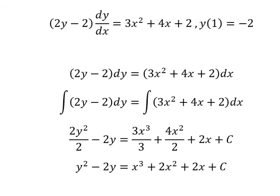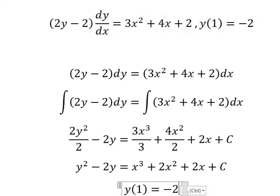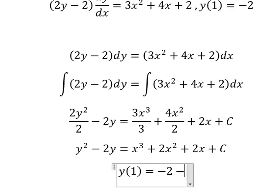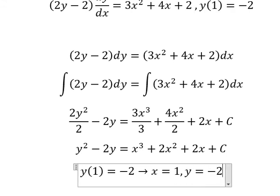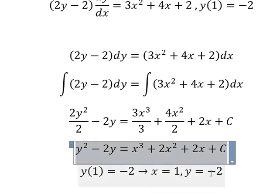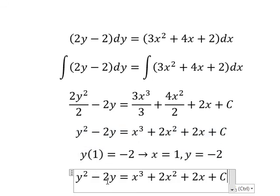Now we have the conditions. That means when x equals to number 1, y equals to negative number 2. Now we need to put number 1 and negative number 2 here to find the value of C.